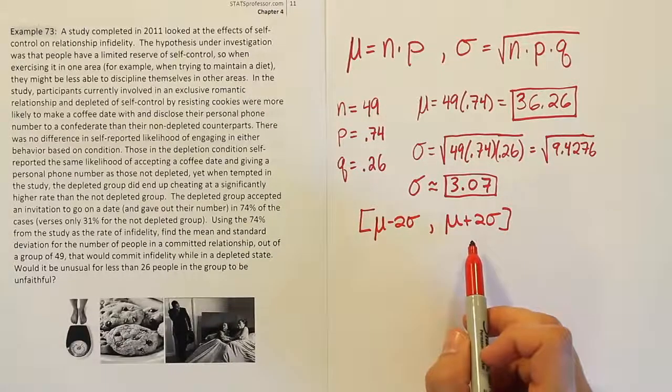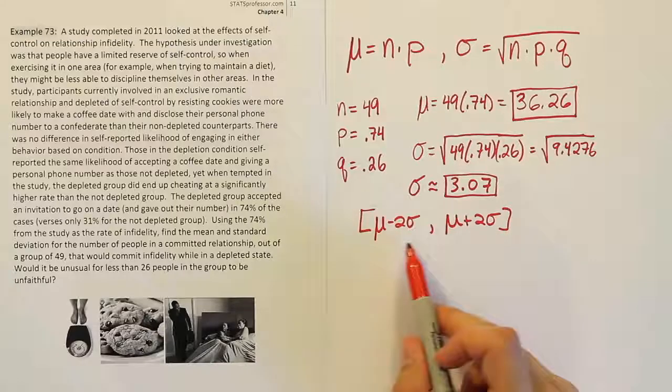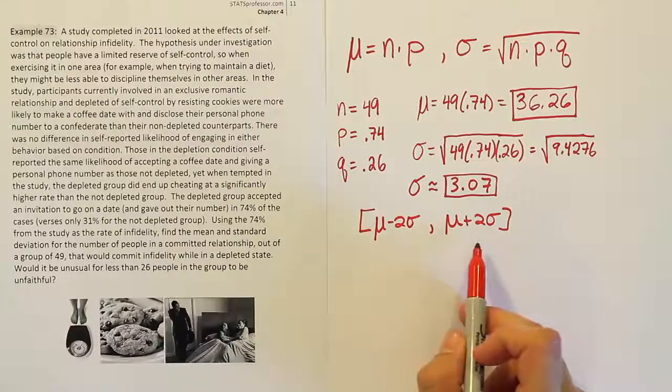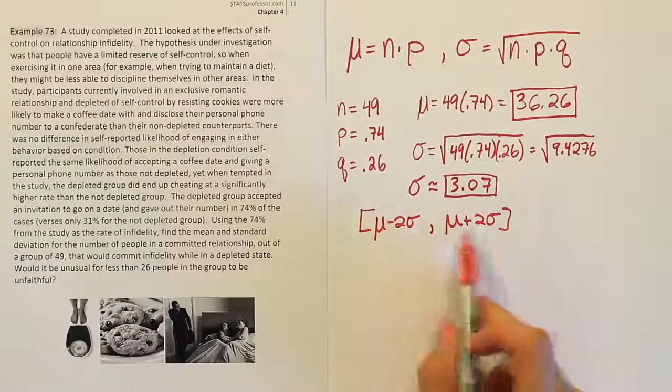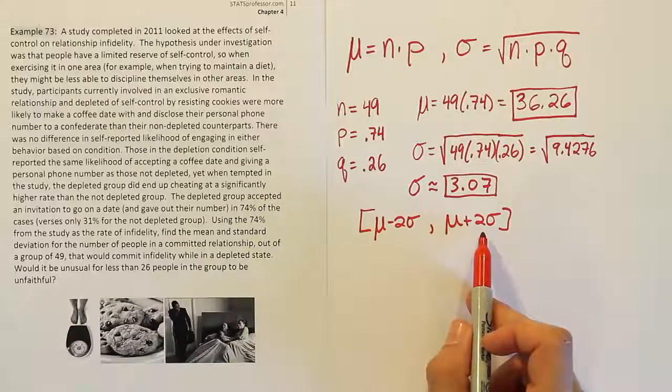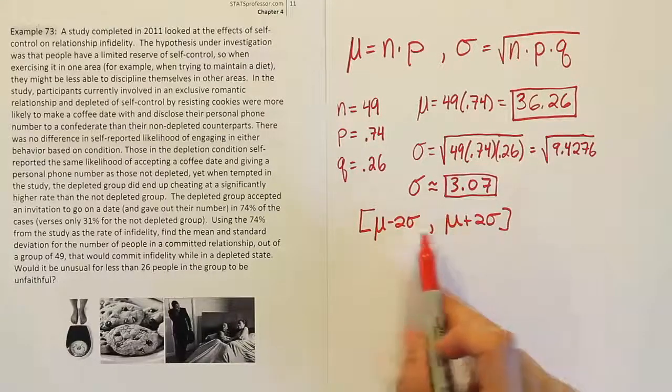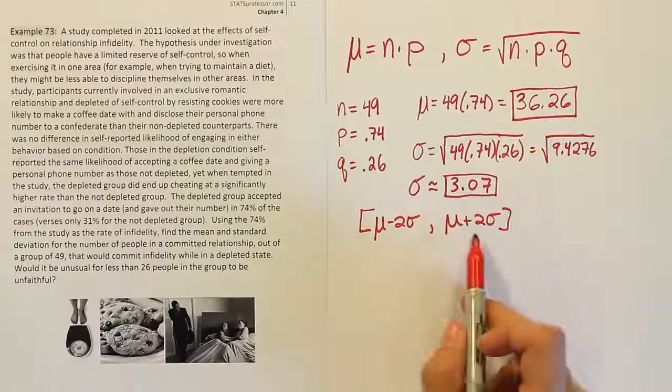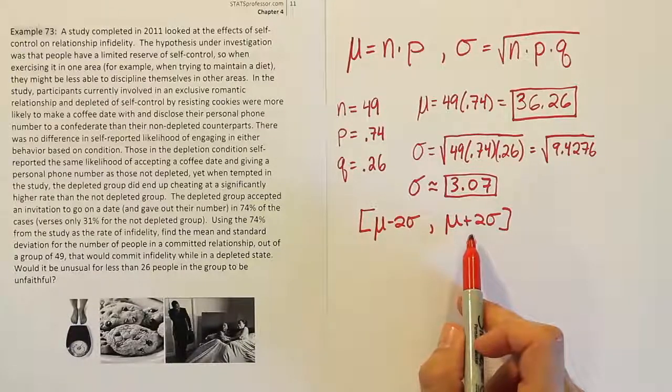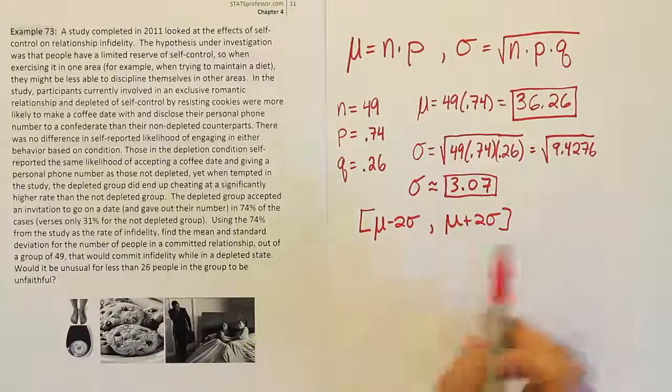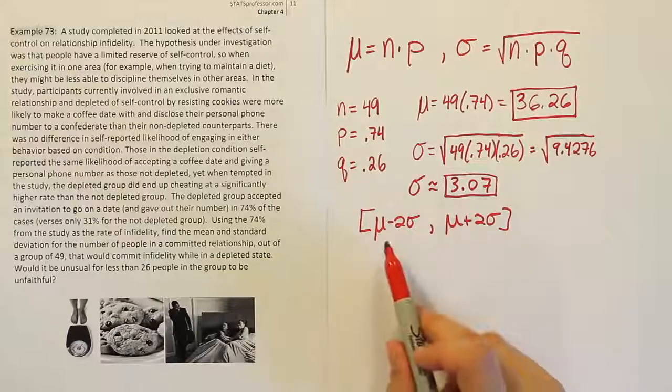Normally under, say, for example, the bell curve assumption, we would have 95% of the data within those two points because it's two standard deviations away from the mean. If it's empirical rule, we have no less than 75% of the data inside that interval. So it's a pretty good interval to capture what's typical. Anything outside of that, we could label unusual. So let's go ahead and do that quickly. Let's do the mean minus two standard deviations.